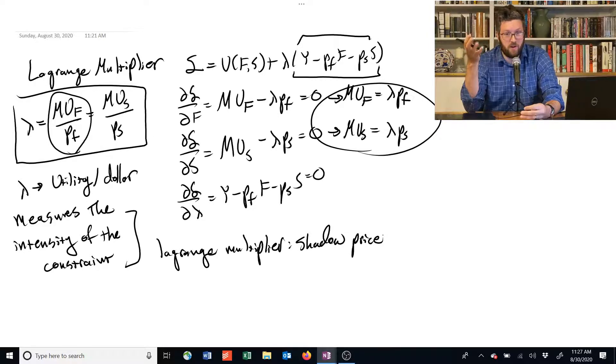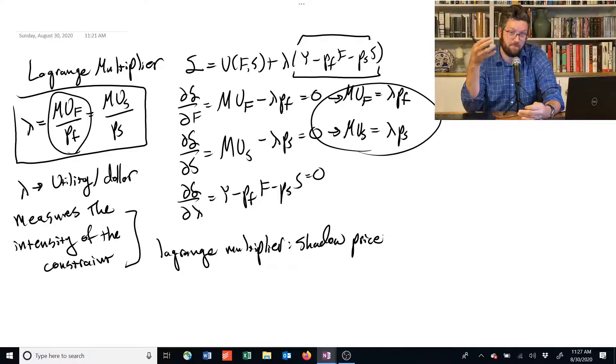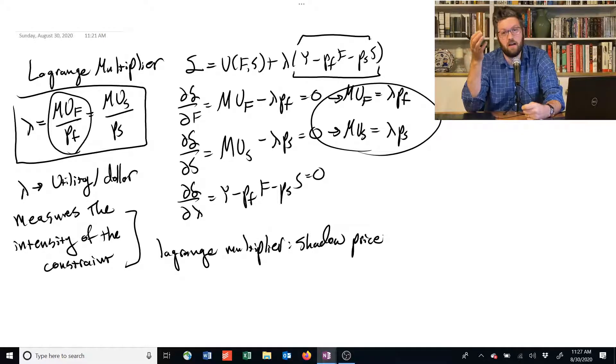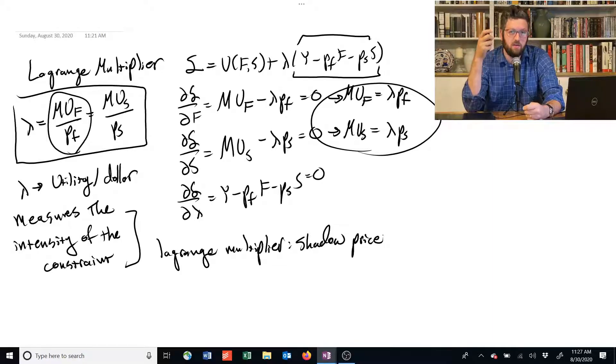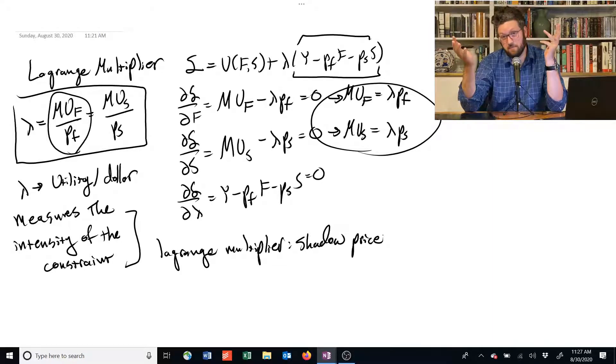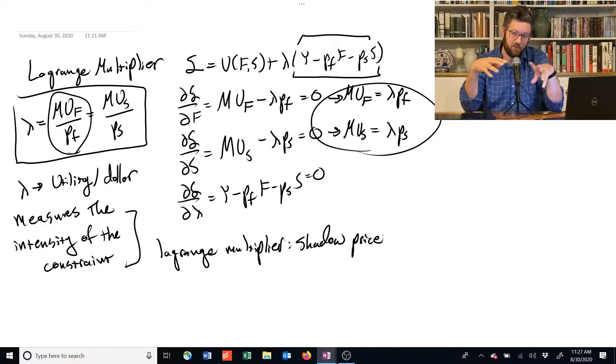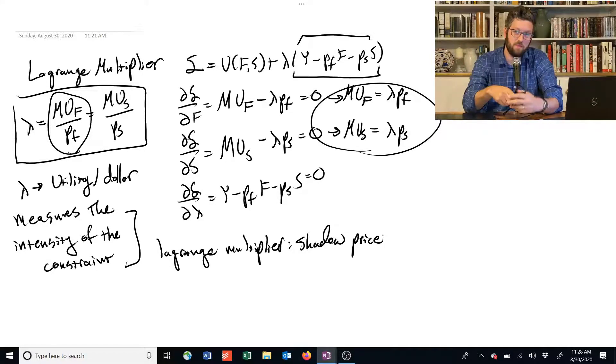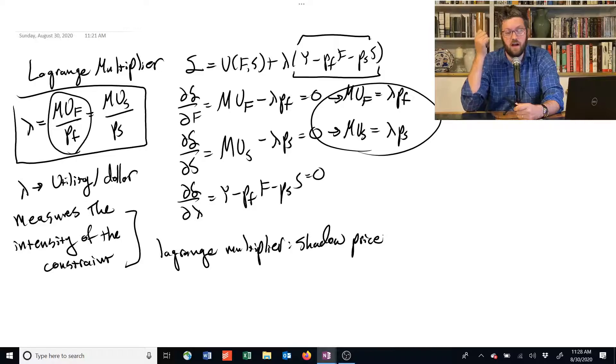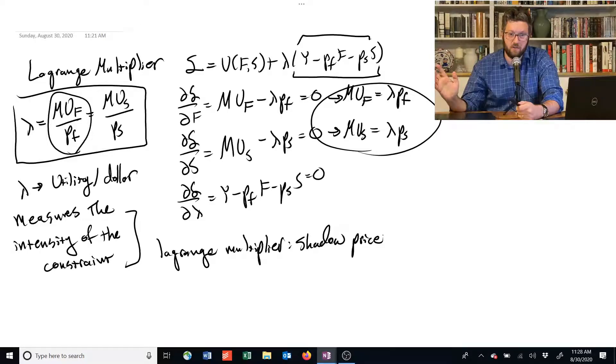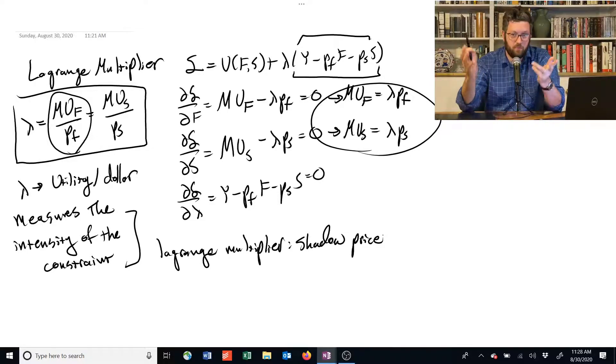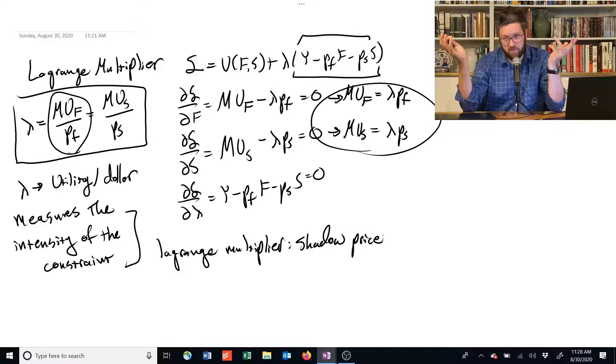So that's what this Lagrange multiplier is doing. That's sort of what its interpretation can be. And it's interesting, I think, but it's sort of abstract and it's not something we can easily observe in the real world compared to people's actual decisions about how much food and shelter to buy. So normally when we ask you to solve the utility maximization problem using a Lagrangian, you're going to solve it and find the amount that this person consumes. But we're not really going to care about the Lagrange multiplier, so you don't really need to find it.